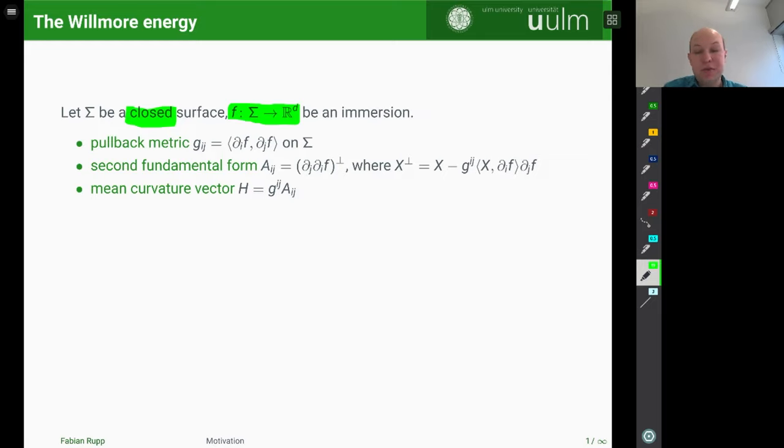We can then define the associated geometric quantities. The first one being of course the pullback metric g_ij = ⟨∂f, ∂f⟩ on Σ. And the second quantity is the second fundamental form II = ⟨∂²f⟩^⊥, where X^⊥ = X - g^i(X, ∂f)∂f. And then with this second fundamental form, we can define the mean curvature vector H = g^ij II_ij by just taking its trace with respect to the metric.